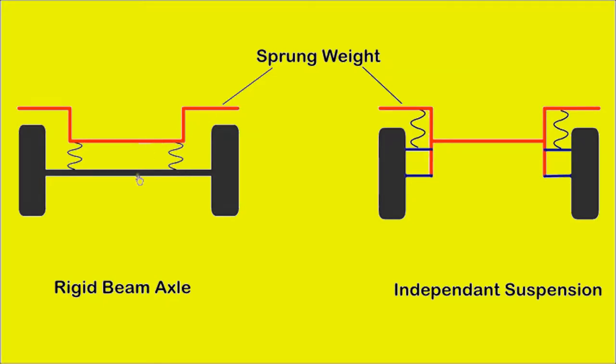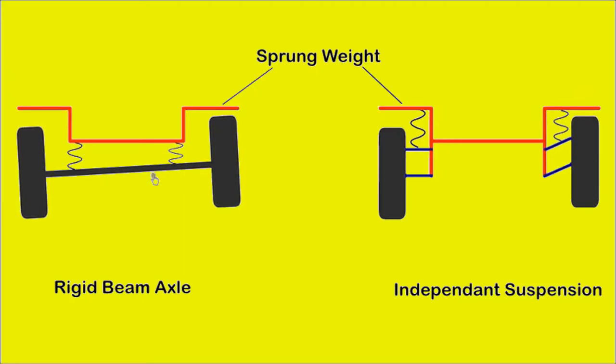The dead axle or rigid beam axle uses a single piece of metal suspended beneath the vehicle, to which the wheels are attached. It has high unsprung weight. Also, the up and down movement of one wheel will also affect the other side, reducing the comfort of the occupants. However, they are strong and with high load bearing capacity, suitable for trucks.